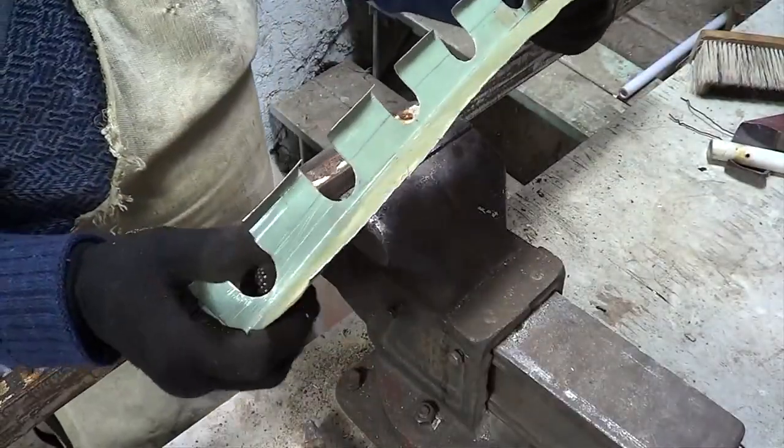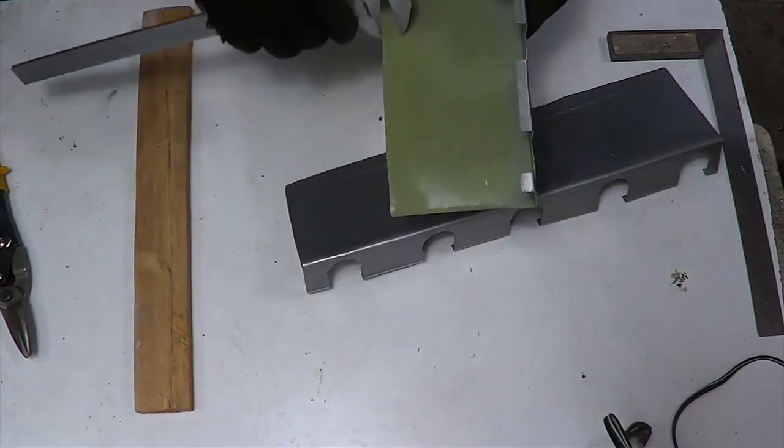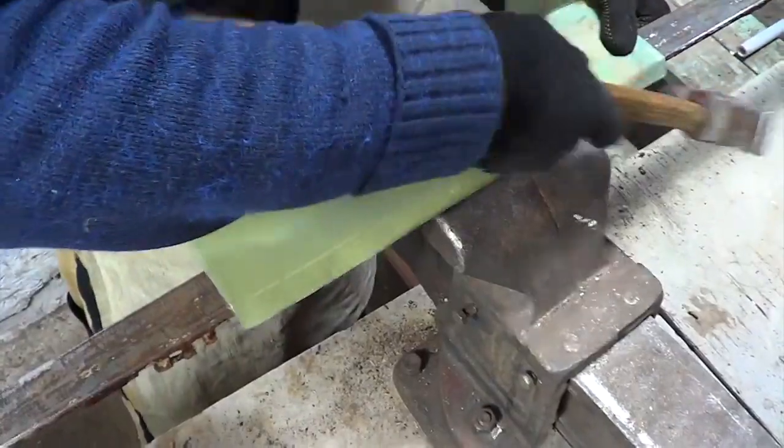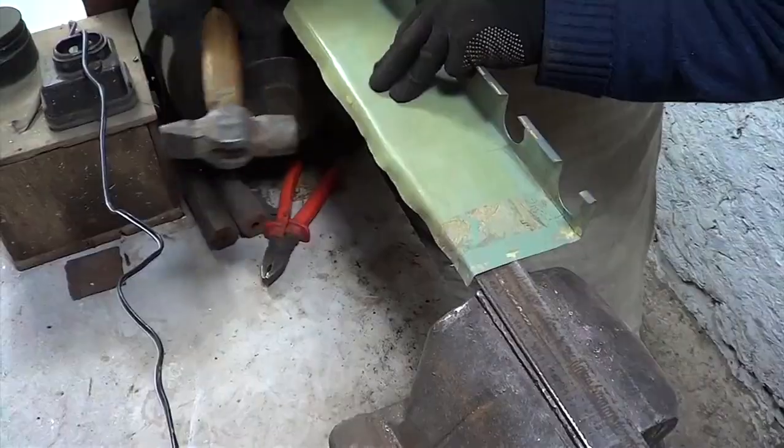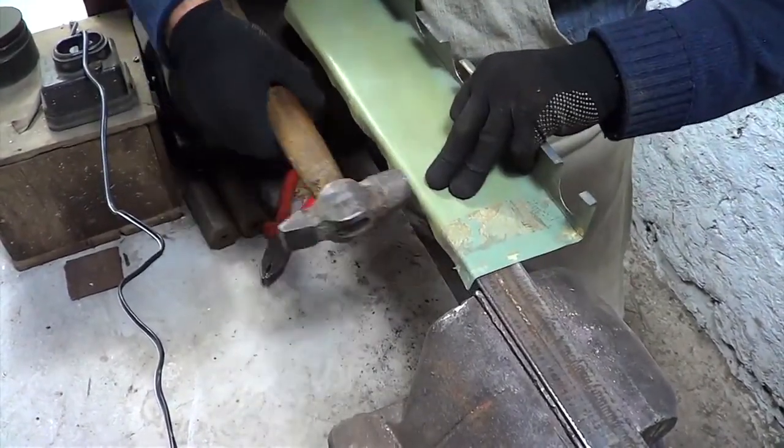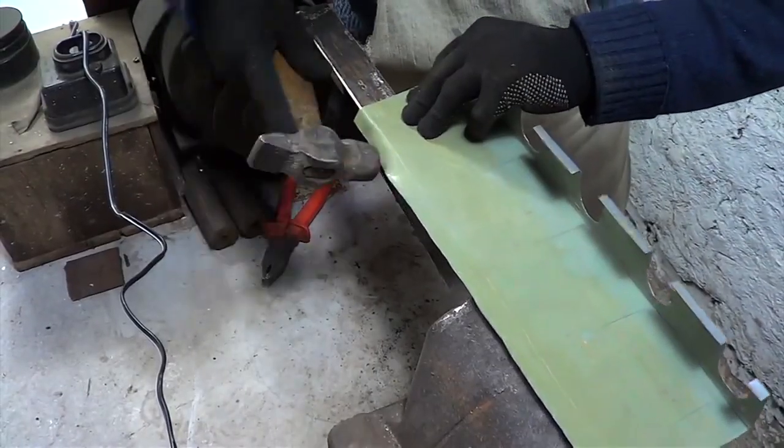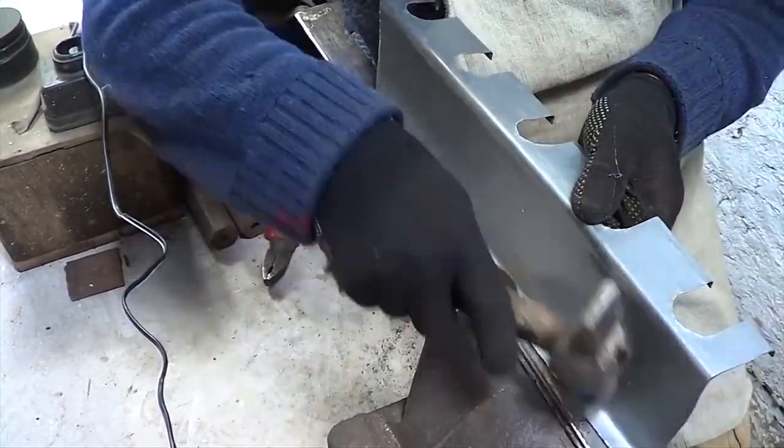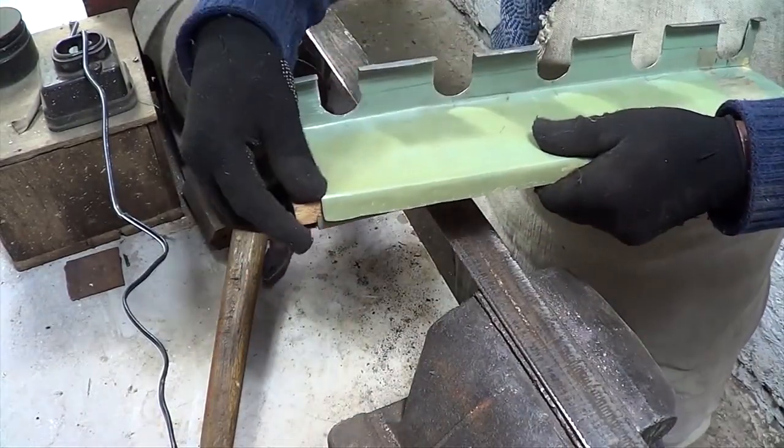We take a wooden bar, measure its width and mark it on the back of our blanks. Now we've got two such blanks between which the bar fits perfectly.